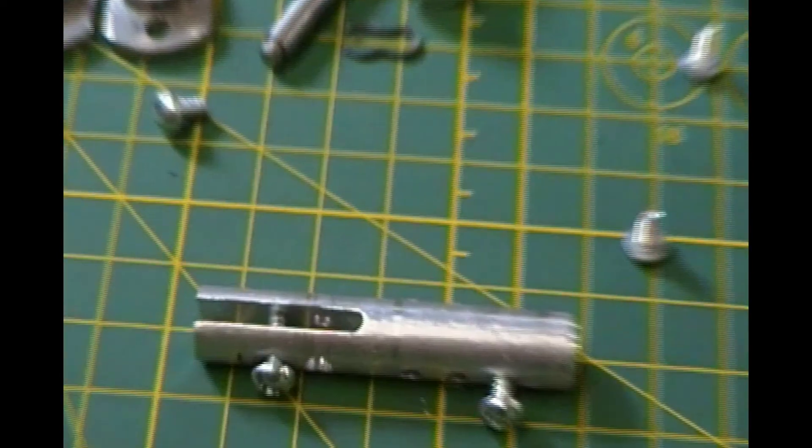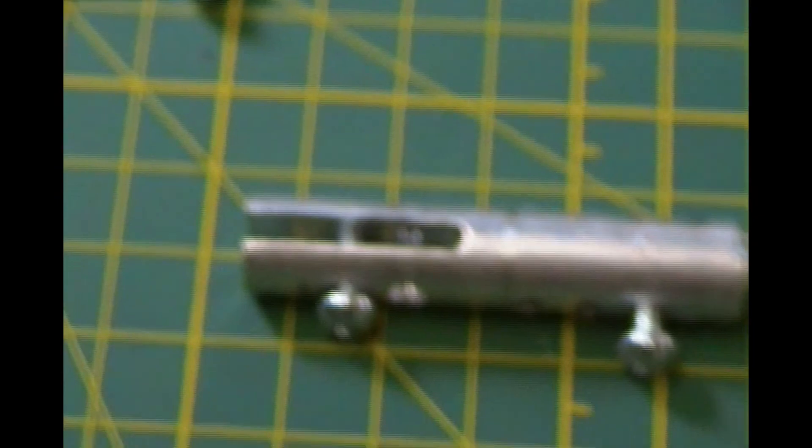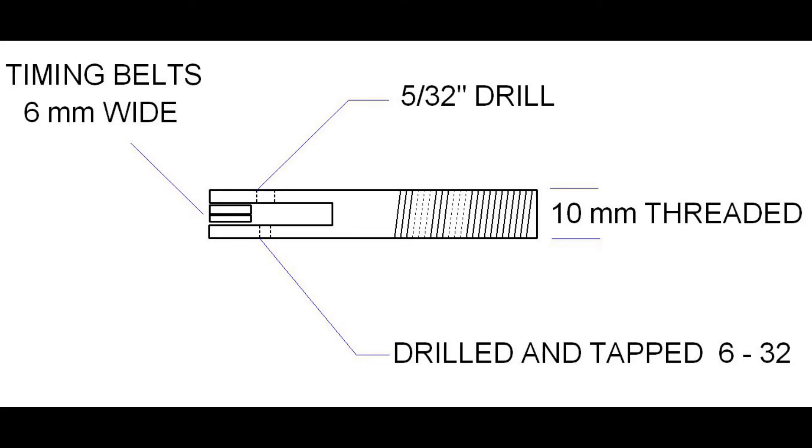I milled a 1/8 inch or 3 millimeter vertical slot 1 inch or 25 millimeters deep at one end to make a belt clamp. I drilled and tapped a hole 3/8 or 10 millimeters from the slotted end. A 4 millimeter drilled and tapped hole and a 4 millimeter screw would also serve the same purpose.